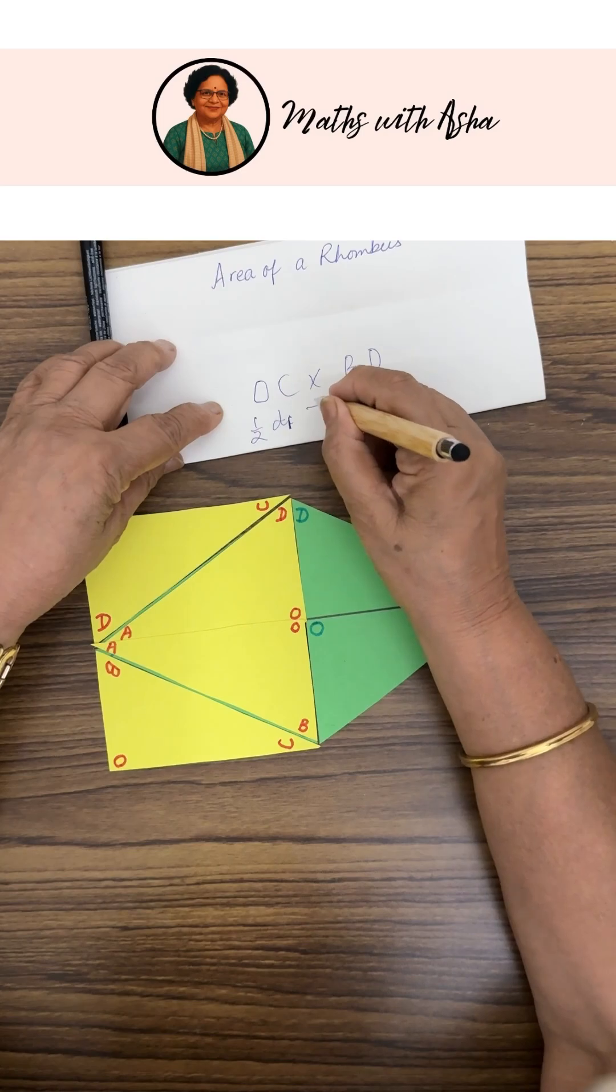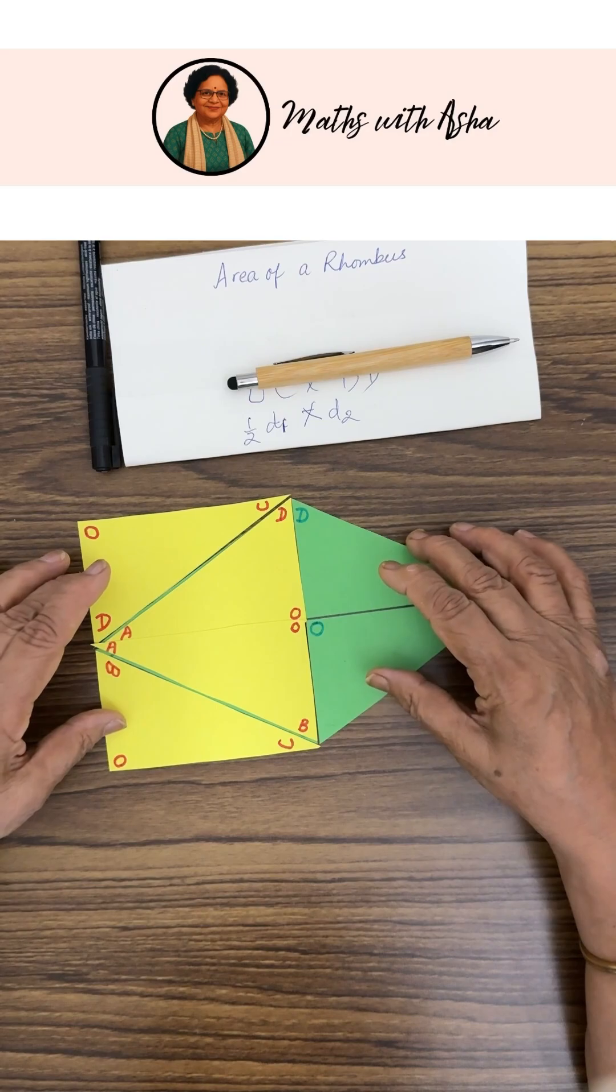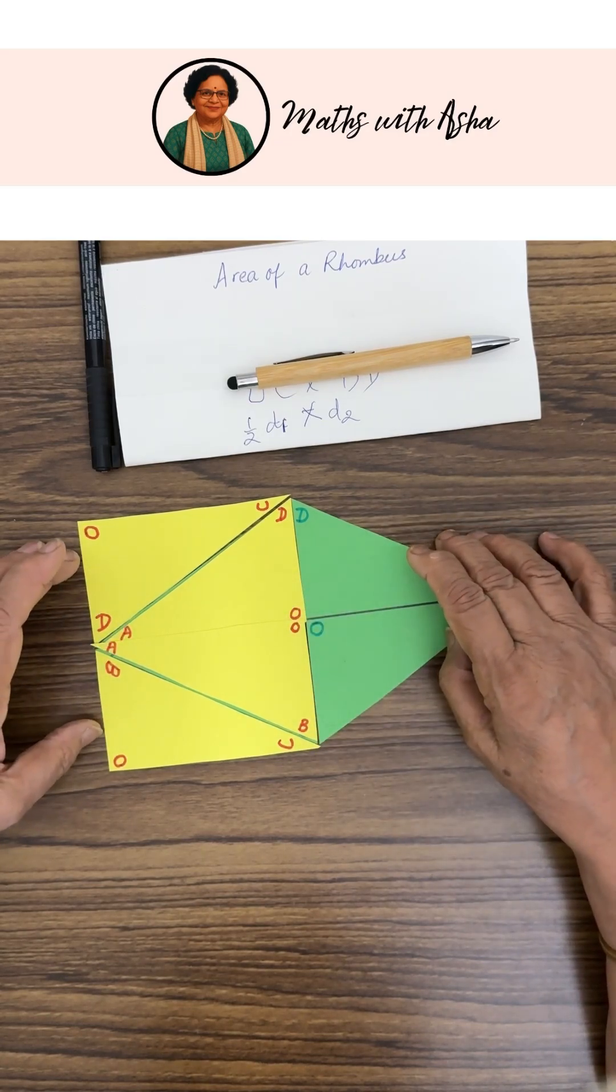Say we have D1 into the other diagonal D2. So what does the area become? Half the product of the two diagonals.